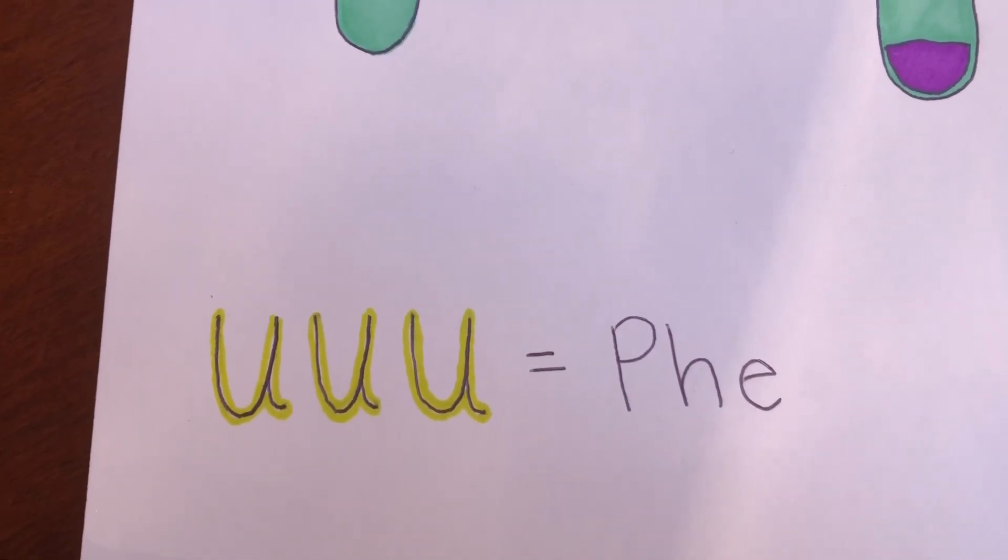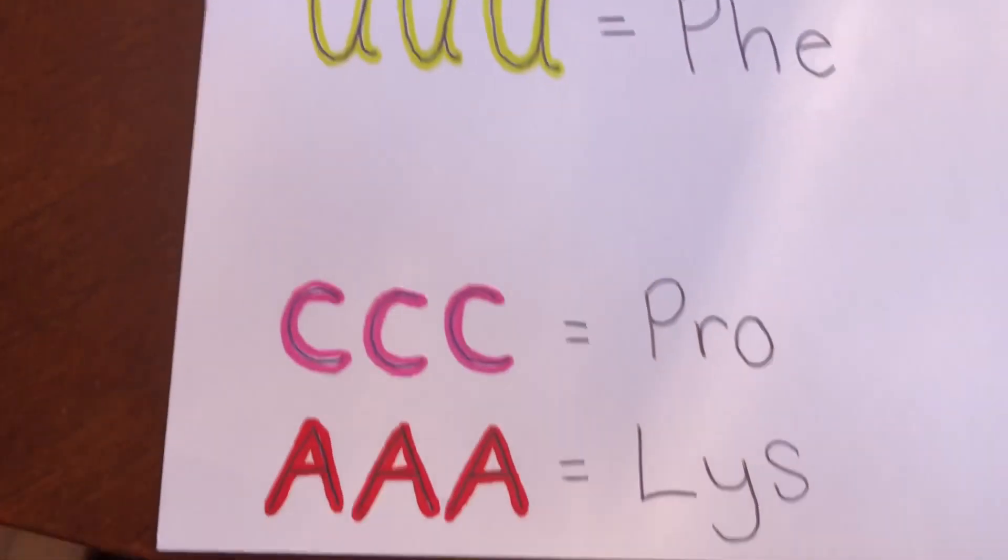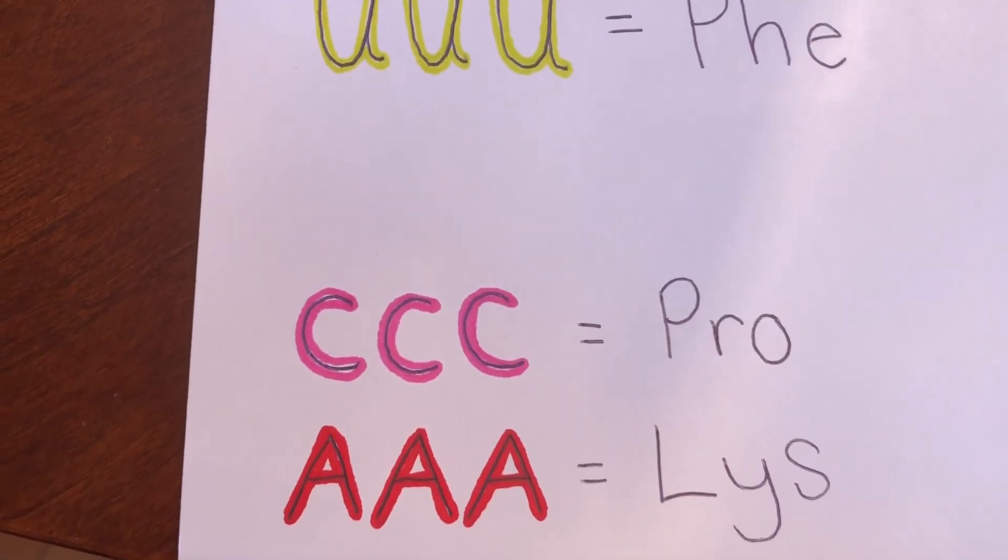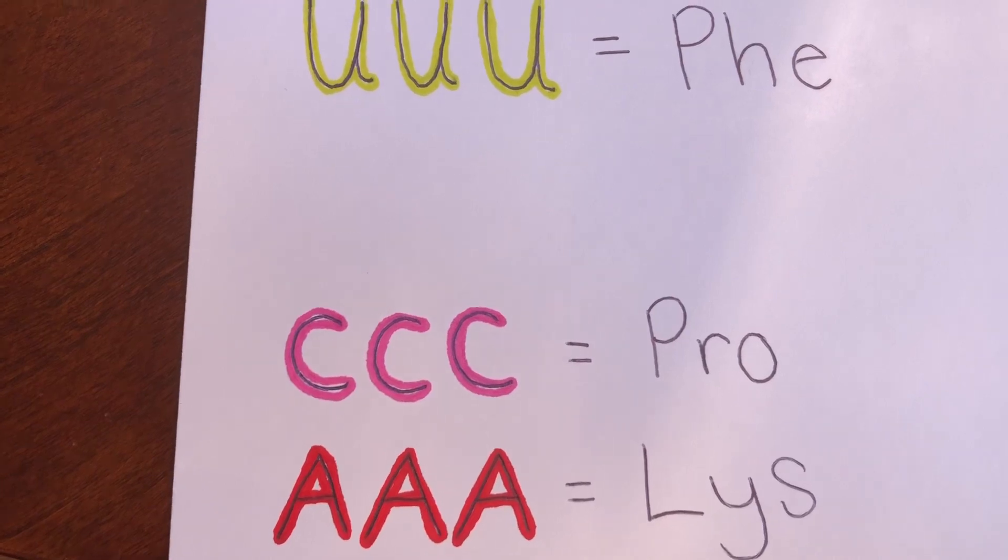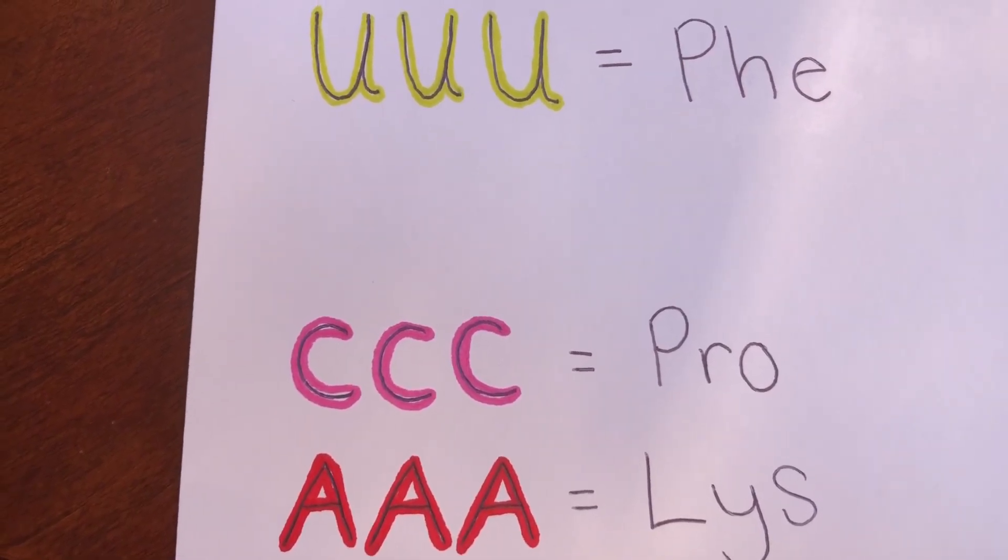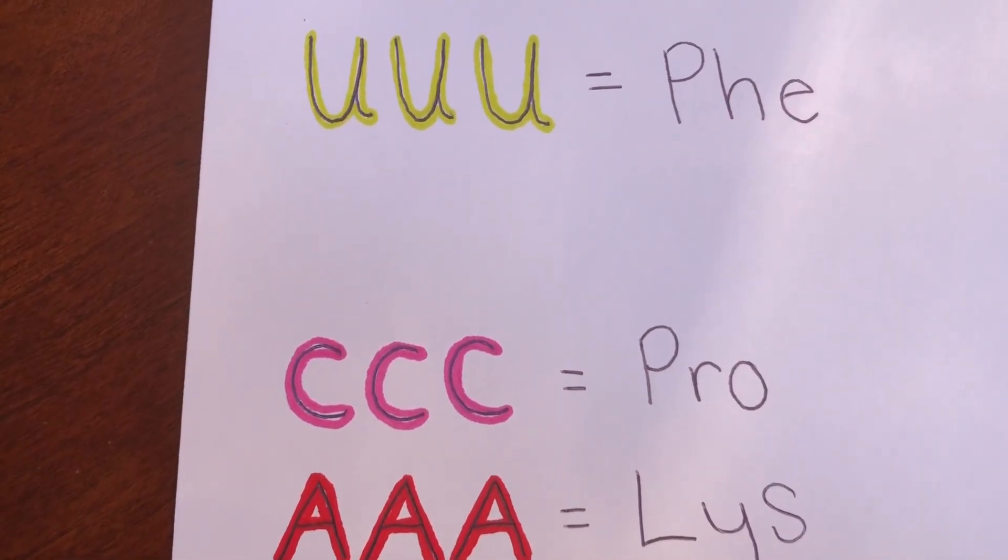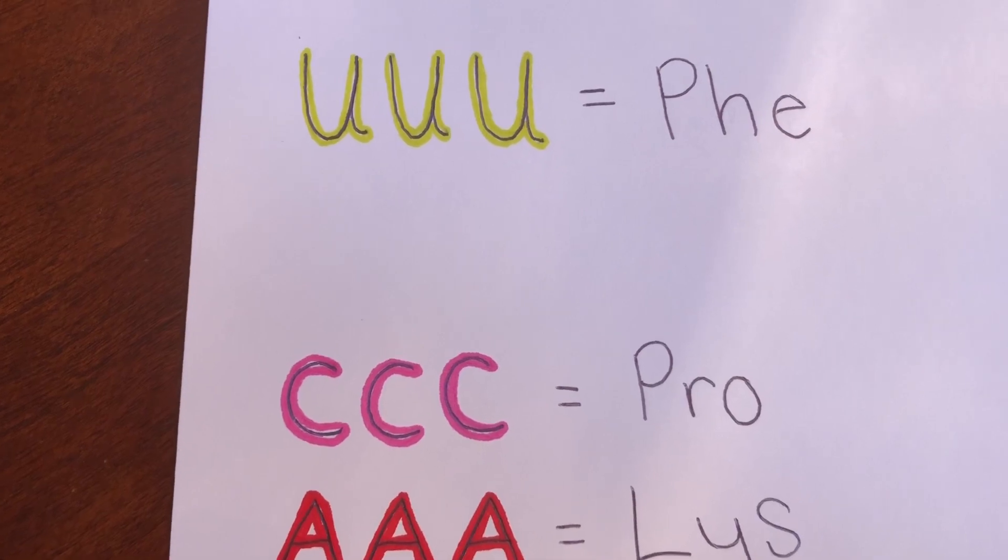Repeating this process, they were able to find that CCC coded for proline and AAA coded for lysine. In conclusion, Nirenberg and Matai were the first to discover that a specific RNA sequence coded for a specific amino acid.